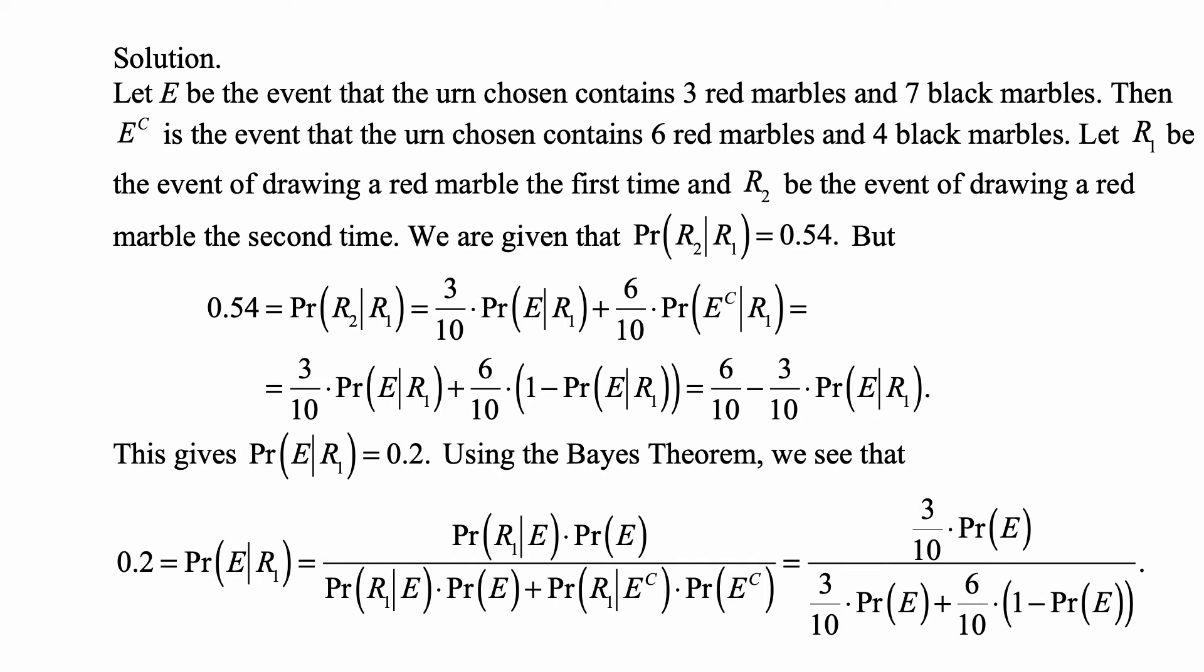We are given that probability of r2 given r1 is 0.54. So 0.54 equals probability of r2 given r1, and that's 3/10 times probability of E given r1 plus 6/10 times probability of E complement given r1, because 3/10 and 6/10 are corresponding probabilities of r2 for E and E complement.